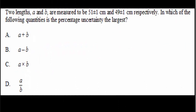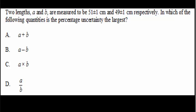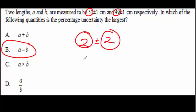And one more IB multiple choice question. Pause the video, read it over, try it out for yourself, then come back for the answer. Hopefully you said the answer is B. What's happening here: you subtract the two values and get a very small value — 51 minus 49 is only 2. But you've got to add uncertainties: 1 plus 1 gives you 2. So in this case your uncertainty is just as big as your value, and it's much bigger than any of the other three cases.